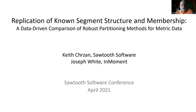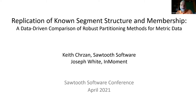The next paper was done with my friend Joseph White at InMoment. When we approach a segmentation study, the data often ties our hands about how to run the analysis. We know from papers at the 2019 Sawtooth Software conference that if we're analyzing choice data like conjoint or max diff and want to build a segmentation, we really need to use latent class multinomial logit. And if we have a mix of categorical and metric variables, latent class analysis is likely our main option.